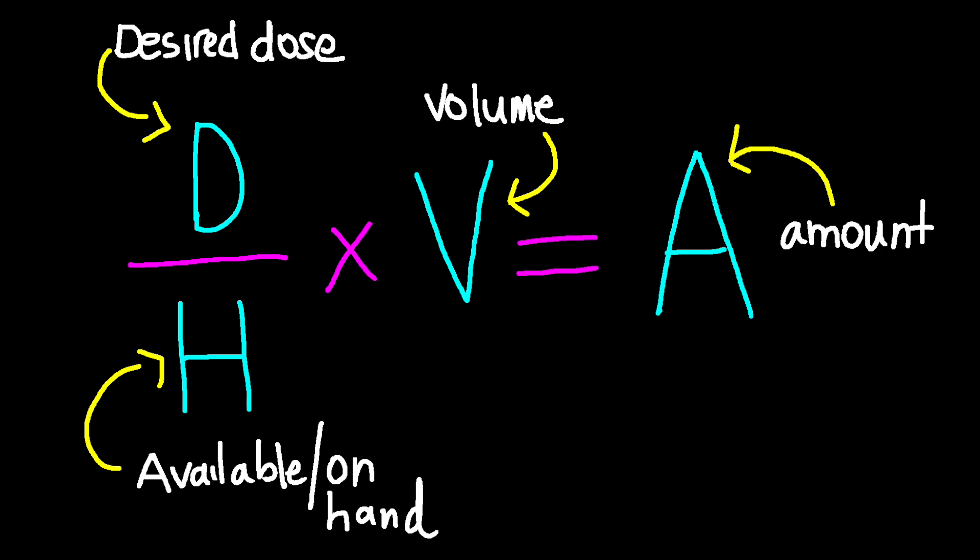Let's do a PO medication calculation. The formula method of choice is: Desired dose (D) divided by What's on Hand (H), multiplied by Volume (V) — V is used for volume-based medications — which equals Amount (A), the amount of medication required for administration.